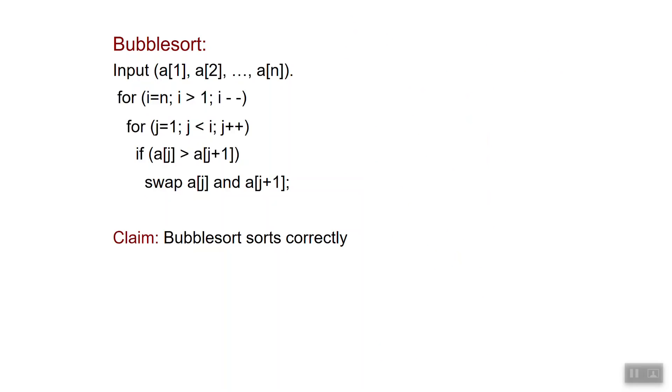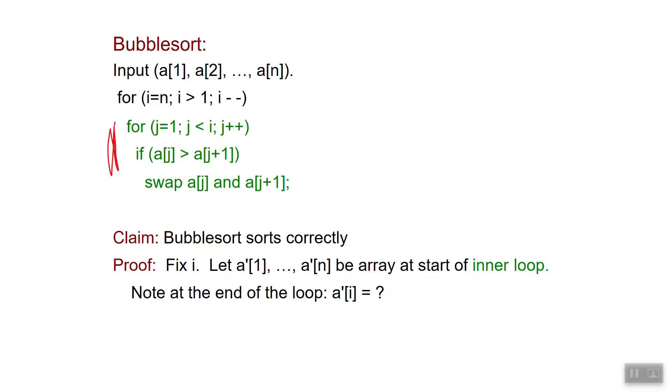So we want to make a claim that bubble sort correctly sorts. We want to break up the argument into a few claims, a few assertions that make us understand what is going on. A good way of doing it for bubble sort is to proceed as follows: let's consider that we fix some particular choice of i, and let's now consider the sequence a prime 1 dot dot dot a prime n, which is the array at the start of the inner loop.